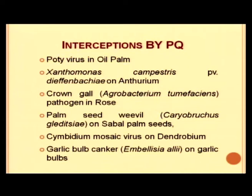There have been notable interceptions made through the plant quarantine regulation system in India. Examples include: potty virus in oil palm; Xanthomonas campestris, a bacterium on anthurium; crown gall pathogen in rose; palm seed weevil on Sabal palm seeds; Cymbidium mosaic virus on Dendrobium; and garlic bulb canker on garlic bulb. These examples illustrate that if any exotic pest enters India, the social and economic impact for control would be enormous.